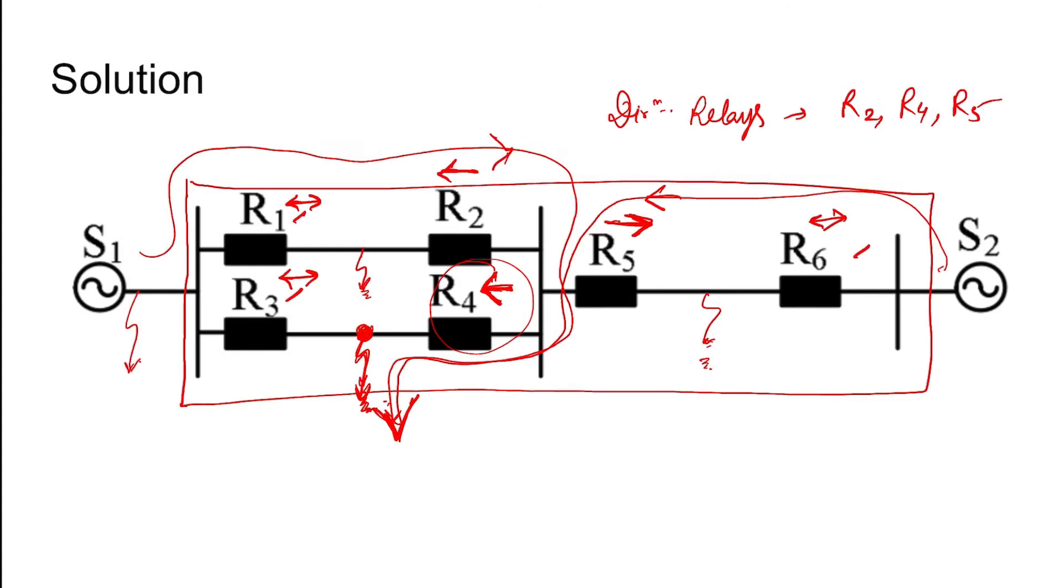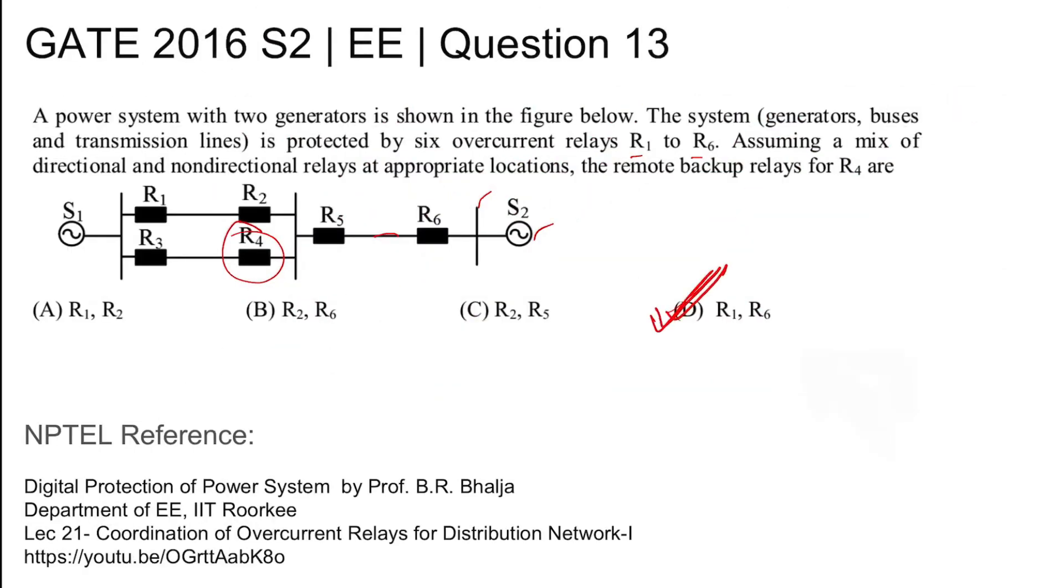So R1 can operate and R6 can operate and can provide backup to R4 in this condition. So the backup relays for R4 are R1 and R6. R1 and R6 are the backup relays. Option D is the correct option. Thank you.